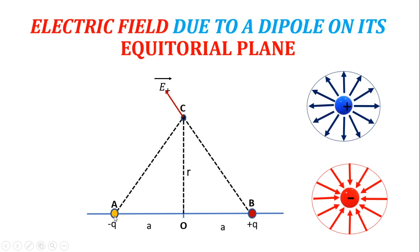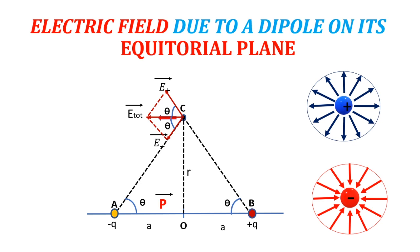Now let us see what is the electric field produced at C due to minus Q. The negative charge will produce a field which is coming towards it in the direction of CA. The resultant will be found by taking the parallelogram law. P is the dipole moment in the direction of minus Q to plus Q. First you draw the dipole, plot the point C, draw CO, then join this triangle, then along BC extend it and here along CA extend E minus, and complete the parallelogram.